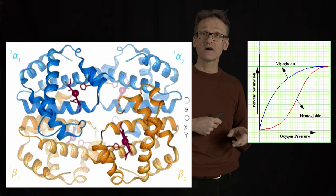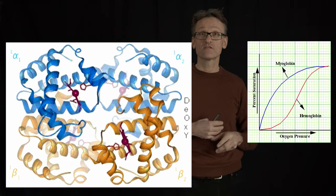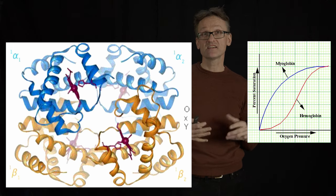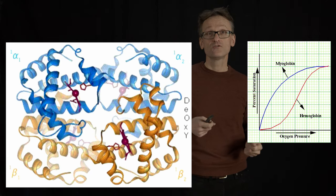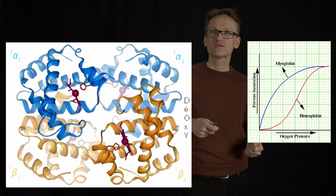Normally I would expect a molecule like myoglobin. In this plot, the first molecule I bind is really easy, and then it gets harder and harder. Do you see how hemoglobin exhibits the opposite pattern?